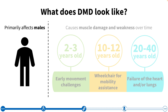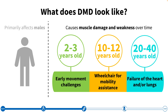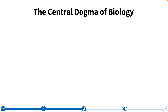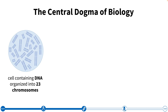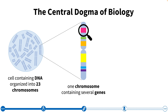Now that we understand how Duchenne is inherited and why it is so much more common in males, you might be wondering what gene is involved and how changes to that gene lead to muscle weakness. To understand how this works, let's review what is known as the central dogma of biology. Remember that each of our cells contains 23 pairs of chromosomes. If we zoom into one chromosome, we can see that it is made up of several genes. Each gene contains the set of instructions needed to make a protein that will go on to perform a specific function in the cell. In order to get from DNA to protein, we need to go through a two-step process.